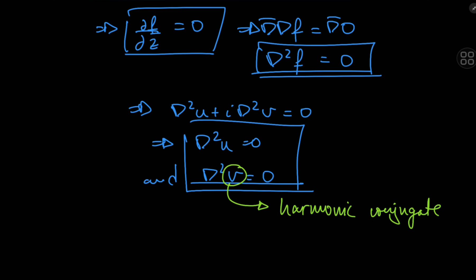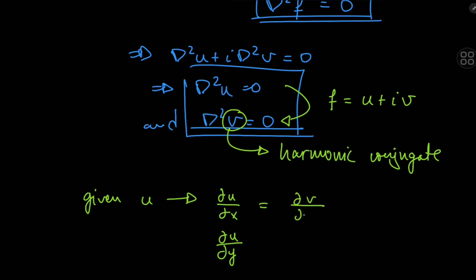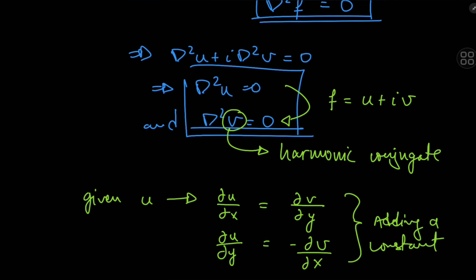The function v is called the harmonic conjugate of u. Given any function u that satisfies the Laplace equation, we can determine the harmonic conjugate and construct a holomorphic function f equal to u plus iv. We use the Cauchy-Riemann equations: given u means we're given partial u by partial x and partial u by partial y, which equal partial v by partial y and negative partial v by partial x respectively. Solving these PDEs for v determines v up to adding a constant, and hence you get a holomorphic function f equal to u plus iv.